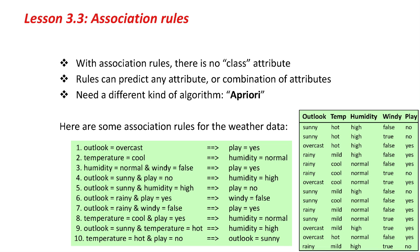Here are some association rules. If the outlook is overcast, then play is yes. There are four overcast instances, and it's yes for all of them — that rule is 100% correct. If the temperature is cool, then humidity is normal — that's also 100% correct.